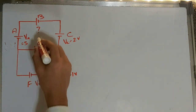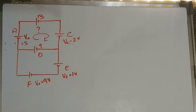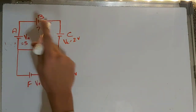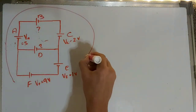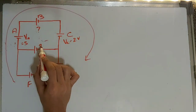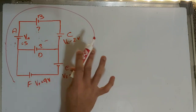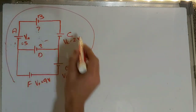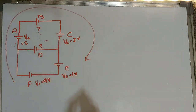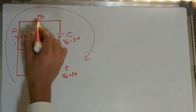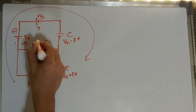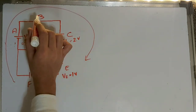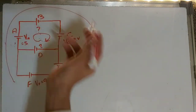Let's take the outer loop first. I first choose a loop where only one voltage is unknown, so I can calculate VB first and then use that result to calculate VD in the inner loop. Let's start from A going clockwise.